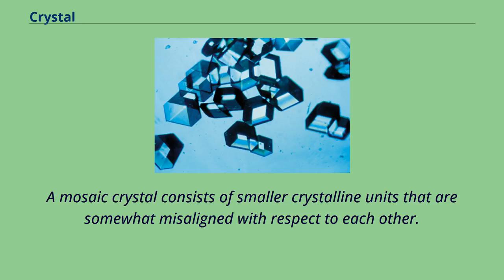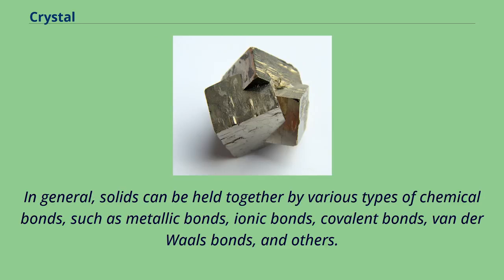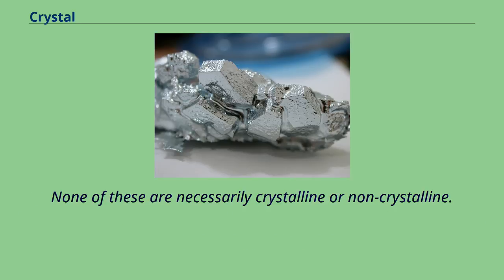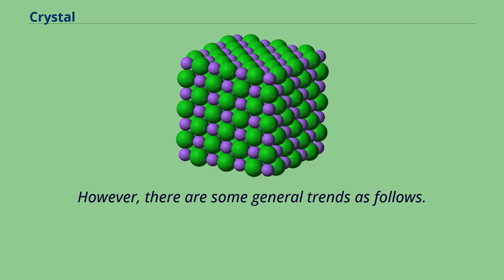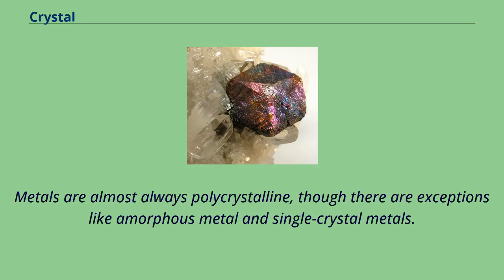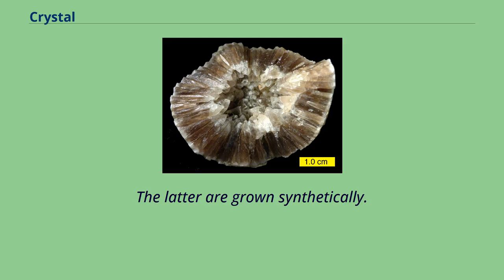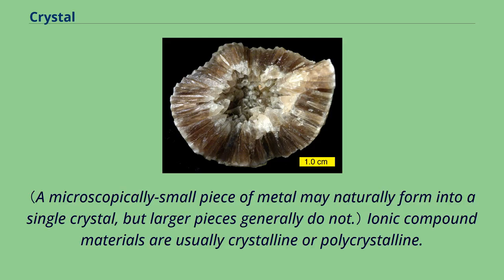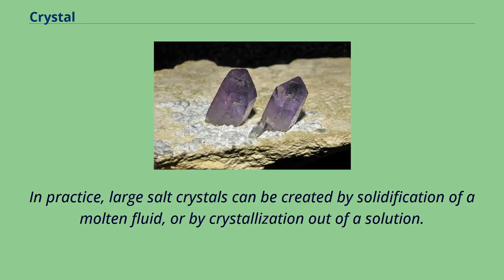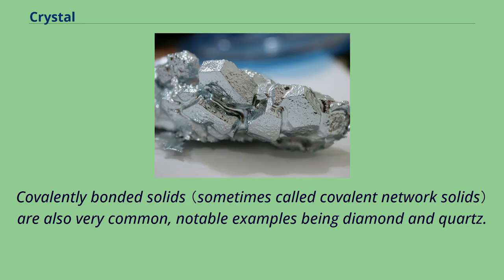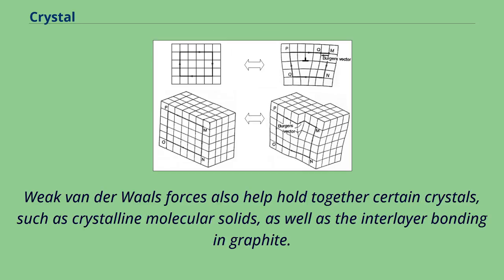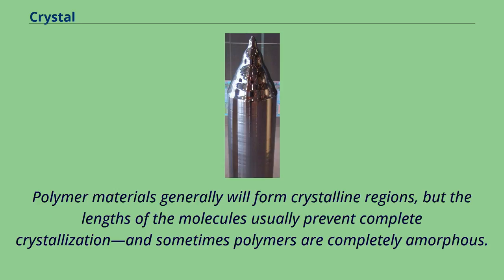In general, solids can be held together by various types of chemical bonds, such as metallic bonds, ionic bonds, covalent bonds, Van der Waals bonds, and others. None of these are necessarily crystalline or non-crystalline. Metals are almost always polycrystalline, though there are exceptions like amorphous metal and single-crystal metals, the latter grown synthetically. Ionic compound materials are usually crystalline or polycrystalline — large salt crystals can be created by solidification of a molten fluid or by crystallization out of a solution. Covalently bonded solids are also very common, notable examples being diamond and quartz. Weak Van der Waals forces help hold together certain crystals, such as crystalline molecular solids, as well as the inner-layer bonding in graphite. Polymer materials generally form crystalline regions, but the lengths of the molecules usually prevent complete crystallization, and sometimes polymers are completely amorphous.